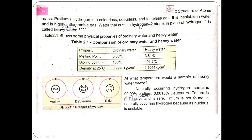Water that contains hydrogen-2 (deuterium) instead of hydrogen-1 is called heavy water. Comparing ordinary water and heavy water: melting point — ordinary water 0.00°C, heavy water 3.81°C; boiling point — ordinary water 100°C, heavy water 101.2°C; density at 25°C — ordinary water 0.99701 g/cm³, heavy water 1.1044 g/cm³.